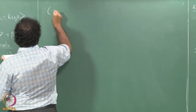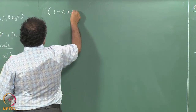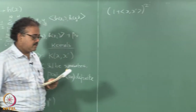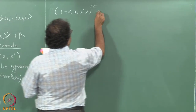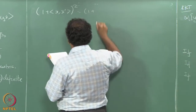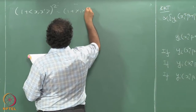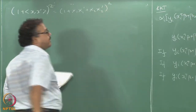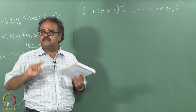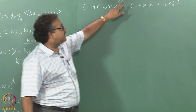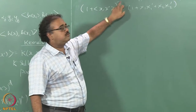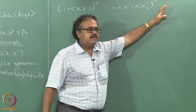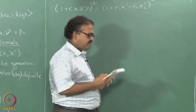Just to convince you, let us look at the polynomial kernel of degree 2 operating on vectors of 2 dimensions. So there are two 2s here — the degree D is 2 and the dimension P is also 2, though they need not necessarily be the same. This is what 1 plus the inner product looks like when you square it.